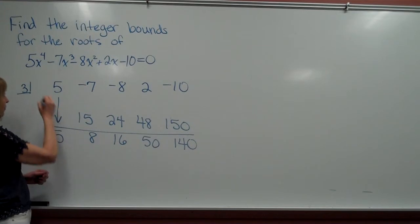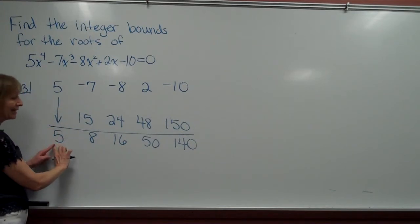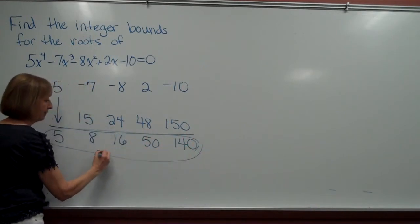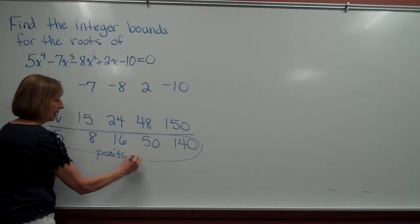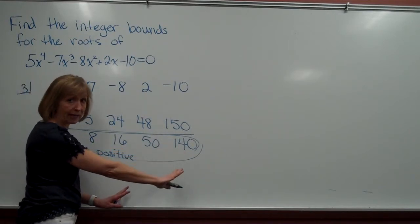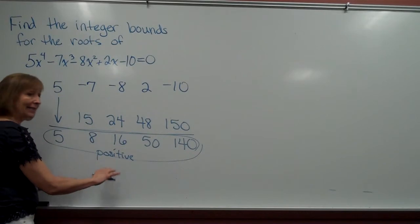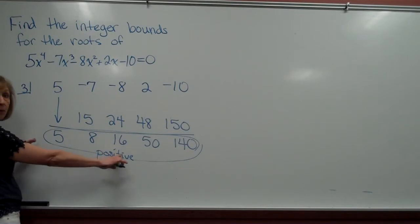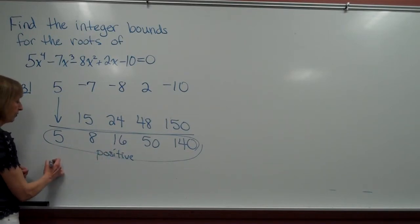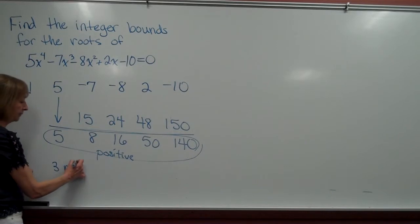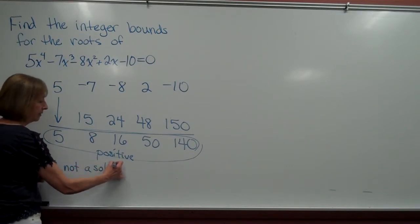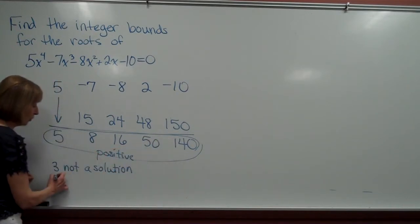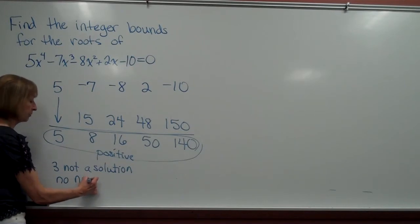So I divided by a positive 3, and the entire bottom of my synthetic division table is positive. I didn't get a zero here, so I didn't find a root, but I did find what's called an upper bound. So since when I divided by positive 3, all the bottom row is all positive, that not only do I know that 3 is not a root because I didn't get a zero as a remainder, but also no number larger than 3 is the solution either.